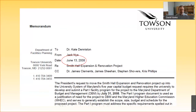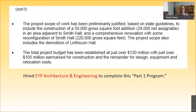It goes back to the first email that I could find about this project, which was in June of 2008. This is when Bob Coret was president, Jim Clements was the provost, Kate Dennison was the associate provost, and Jack Nye was in charge of facilities and planning. This is where we heard that the Smith Hall Expansion and Renovation Project was moving up in the University System of Maryland's five-year capital budget plan.